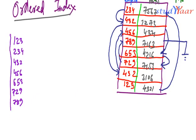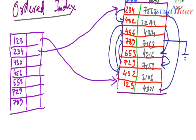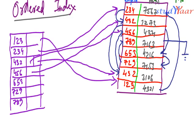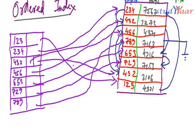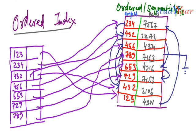And my index would store a pointer. So it's going to be something like 123 would point to this record, 234 would point to this record, 432 would have two pointers. First pointer would point to this record and second pointer would point to this record. Then 456 would point to this, 653 would point to this, 729 pointing to this and 789 pointing to this record. So, this is my index that was based on employee ID.